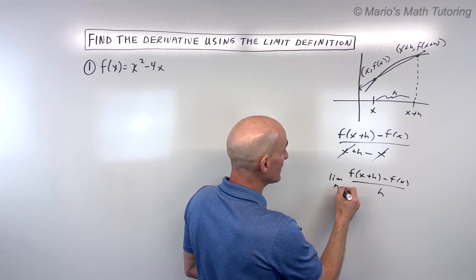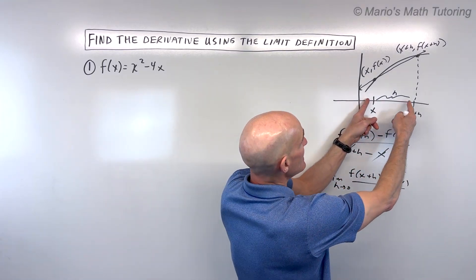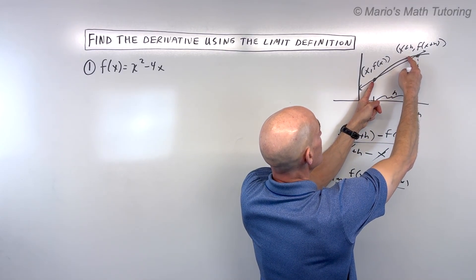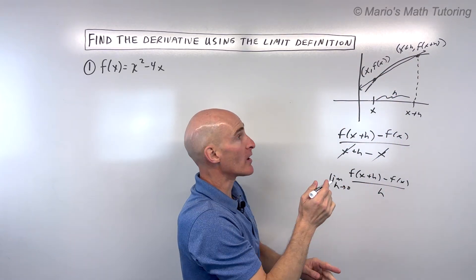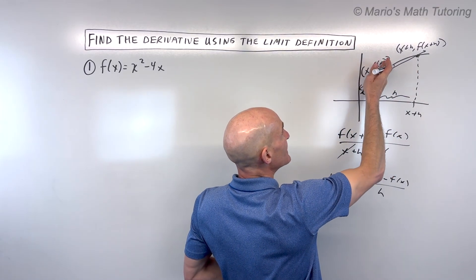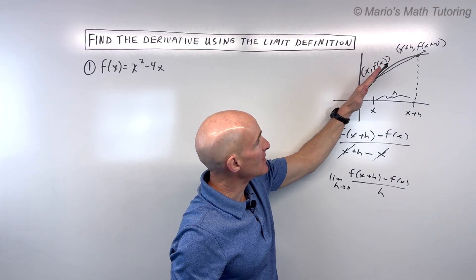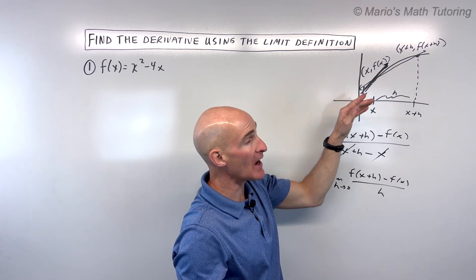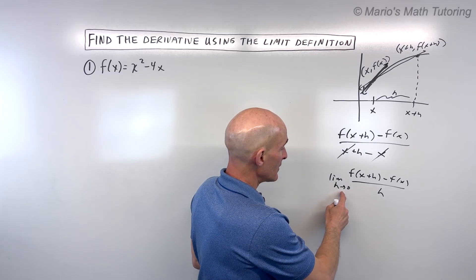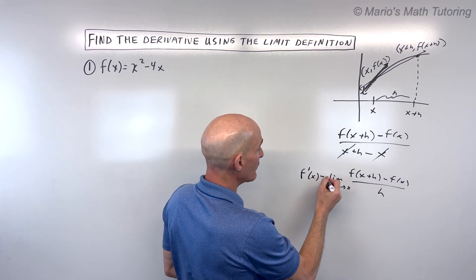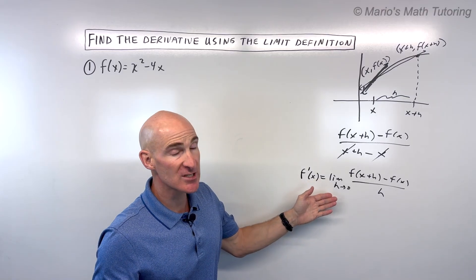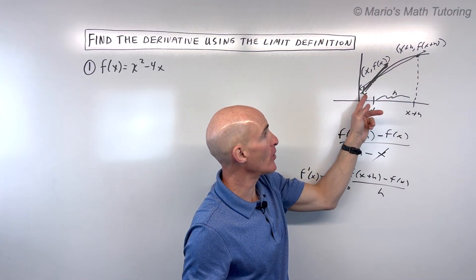Now what we're going to do is take the limit as h approaches zero. What does that mean? It means as this distance becomes smaller and smaller — as h gets smaller and smaller — this point gets closer and closer to the first point until they're right on top of one another. What happens there is you get, instead of the average rate of change or the secant line, the instantaneous rate of change, which is represented by the tangent line. It just barely touches the curve at this one point. This is oftentimes referred to as f prime of x — the first derivative. It's really a formula for the slope of the tangent line at any point along this curve.